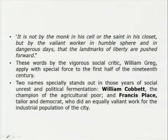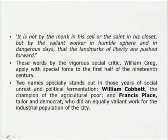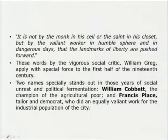The mid-Victorian period would ultimately see often contrary forces — a lot of contradictions and paradoxes, like the promise of progress yet the emptiness of long-held beliefs. As the vigorous social critic William Gregg wrote: 'It is not by the monk in his cell or the saint in his closet, but by the valiant worker in humble sphere and in dangerous days that the landmarks of liberty are pushed forward.' Two names dominated the social history: William Cobbett and Francis Place, who did equally valiant work for the industrial population of the city.